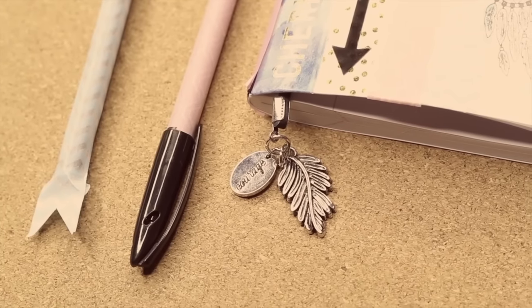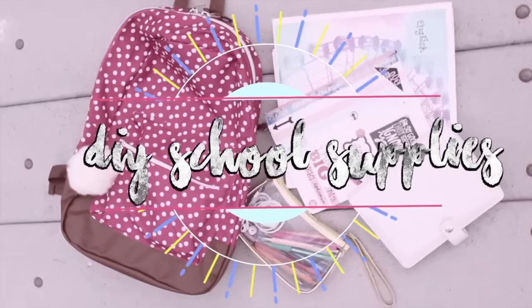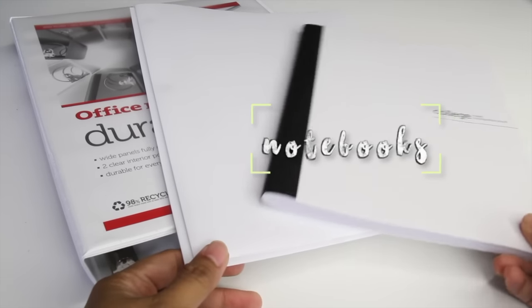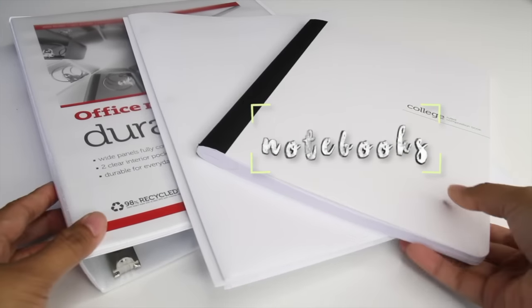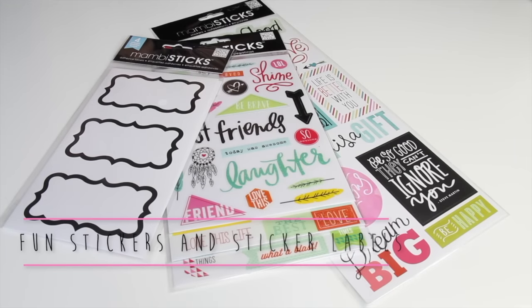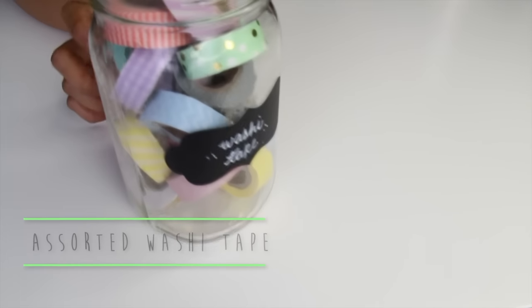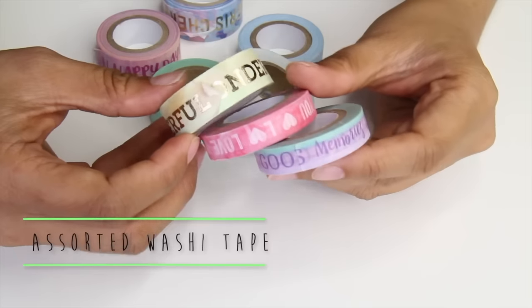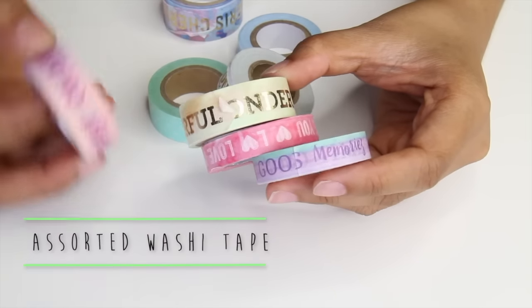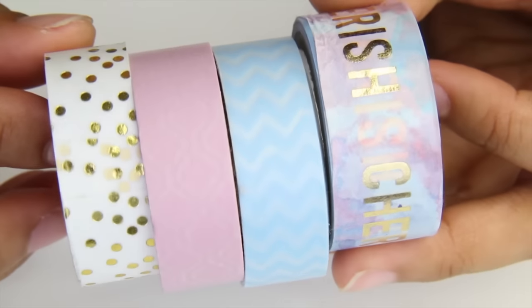Links to the supplies for these DIYs are listed down in the description box and make sure to stay till the end for a special giveaway. Starting off with some plain school supplies - I have a notebook, folder, and binder that we're gonna decorate. Pick up some fun stickers and sticker labels that match your style. You can also pick up some assorted washi tape - this is a great way to add color to your plain school supplies and show your personality.